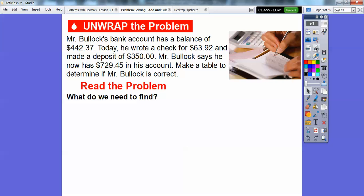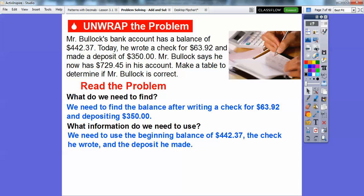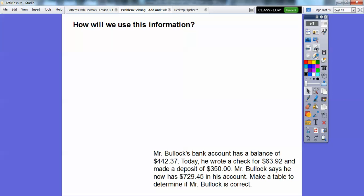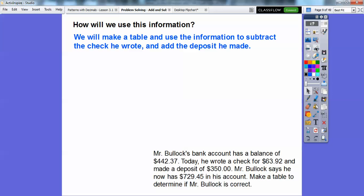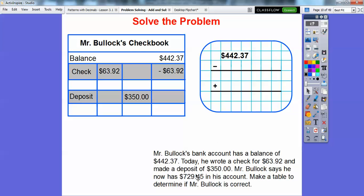We're going to read the problem. What do we need to find? We need to find the balance after we wrote the check of $63.92 and then he deposited $350. What information are we going to use? We need to use the beginning balance of $442.37, the check that he wrote, and the deposit that he made. So we're going to be doing some adding and subtracting. We'll make a table and use the information to subtract the check he wrote and then add the deposit he made, and see if it comes up to the balance that Mr. Bullock says, $729.45.